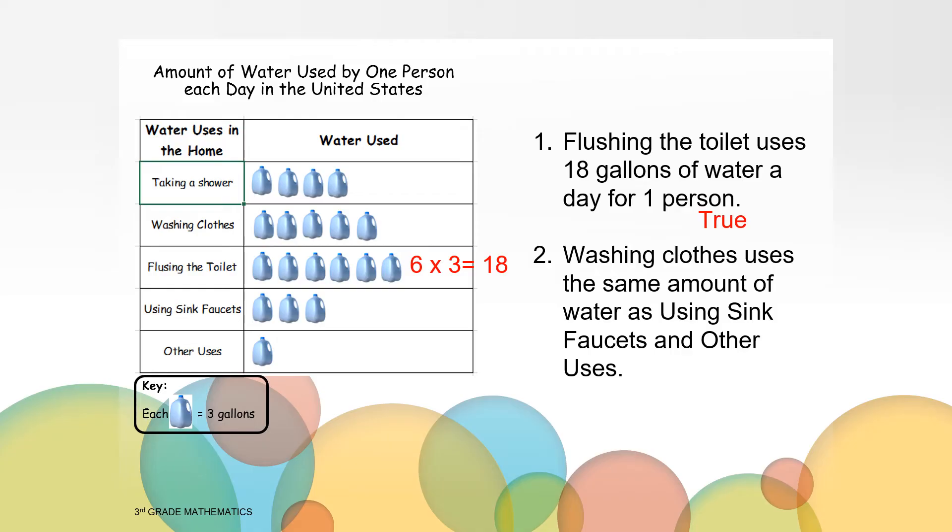How about statement number two? Washing clothes has five pictures and five times three is a total of 15 gallons of water. We need to compare that to using sink faucets and other uses. Using sink faucets has three pictures and three times three equals nine. Other uses has just one picture, which means three gallons of water. If we add those together, nine plus three equals 12 and 12 is not equal to 15. So number two is false.